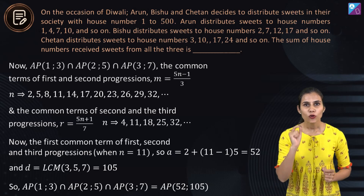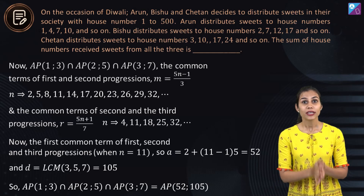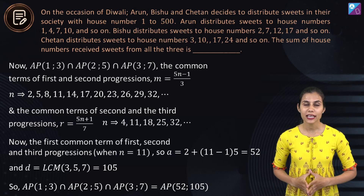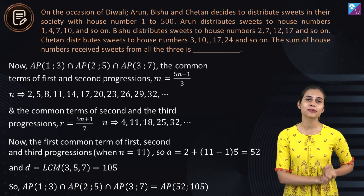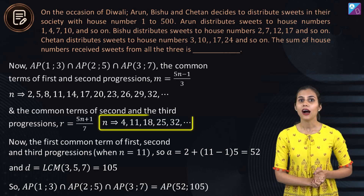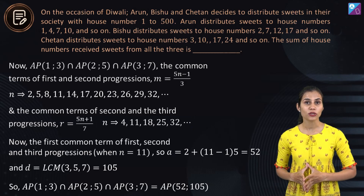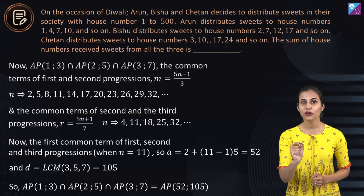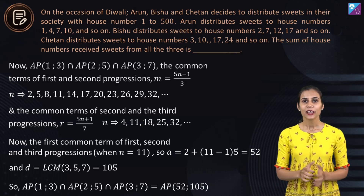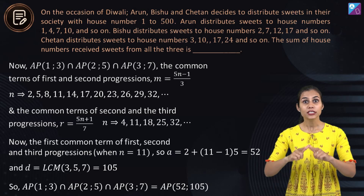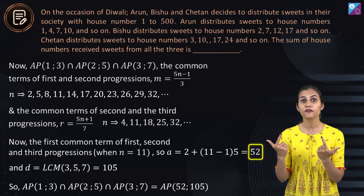Next, equate the general terms of the second and third APs, giving r equals (n plus 1) divided by 7. The positive natural values of n for which r is a natural number are also listed. In both lists, the first common value of n is 11. Substituting into 5n minus 3 gives 55 minus 3, which equals 52.